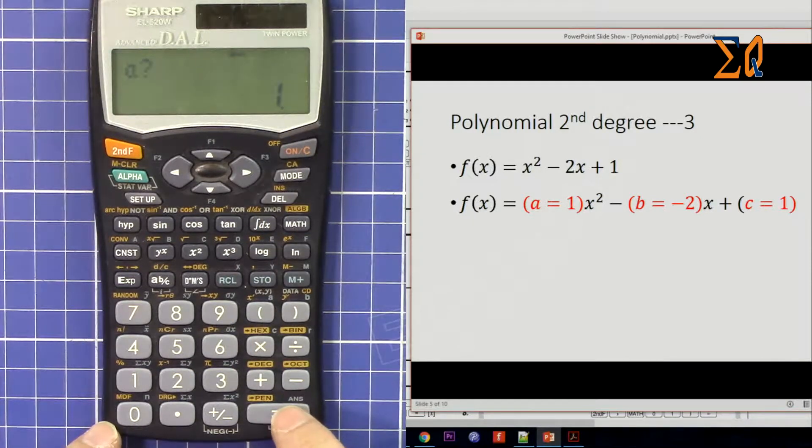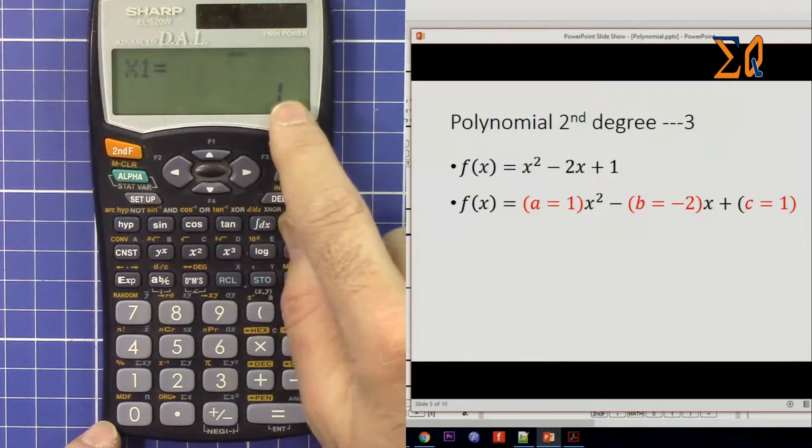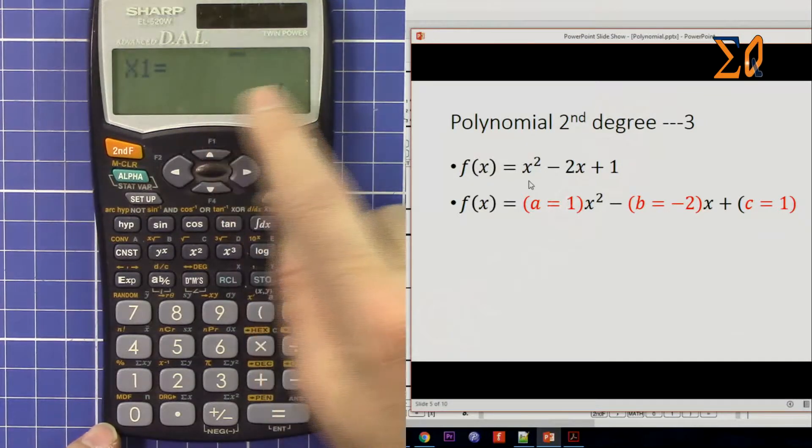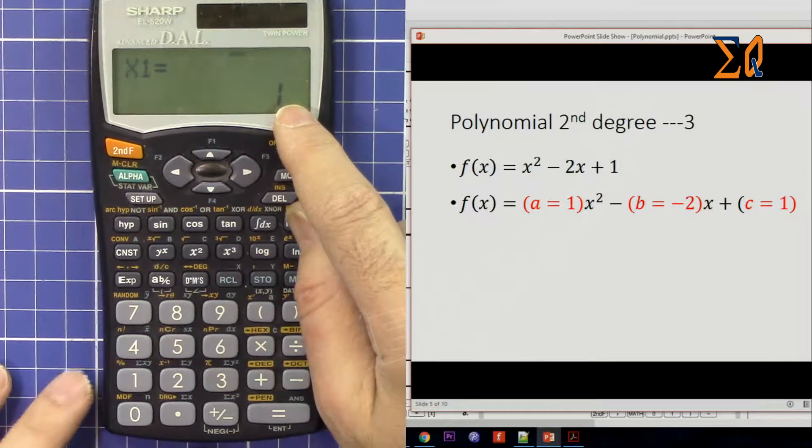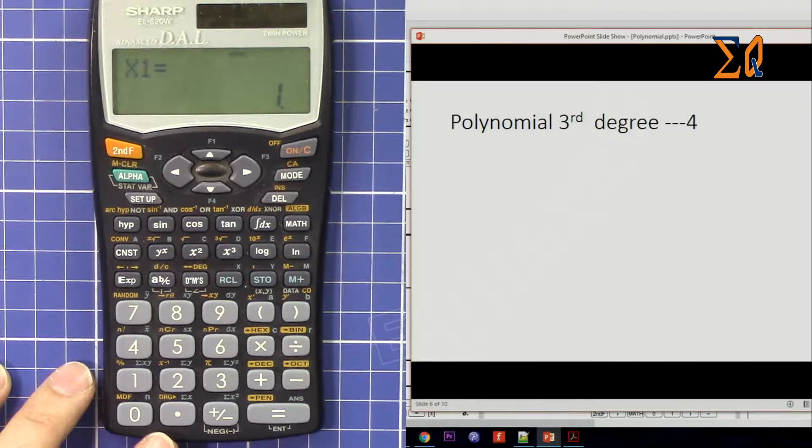So x1 is 1. Here when you see x1 is 1, because we know this is quadratic we are supposed to have two values. So we have two values, both of them are 1. That's why I selected this example.